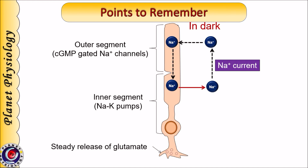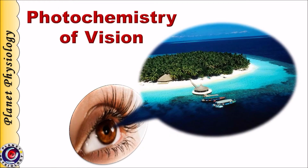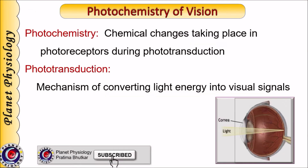With this background knowledge, let us start with the proper topic — photochemistry of vision. The term photochemistry means chemical changes taking place in photoreceptors during the phototransduction process. Phototransduction is the mechanism of converting light energy into visual signals.